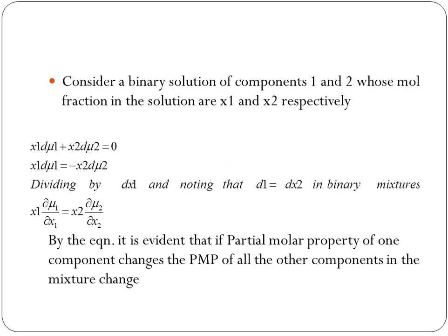Now, let us take a binary solution, which means there are only two components that make up the solution, and the mole fractions of the components are x1 and x2 respectively. Since x1 + x2 = 1 (because the sum of all mole fractions in a solution should equal 1), if you differentiate this equation, we get dx1 = -dx2.